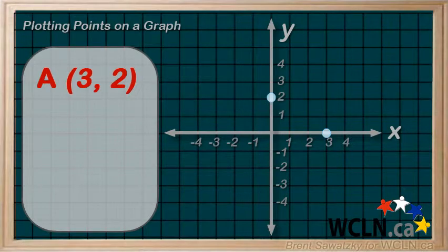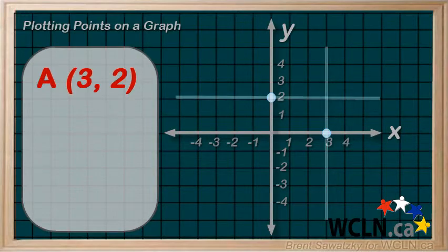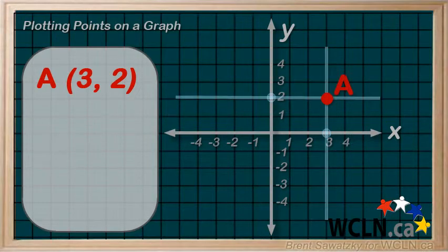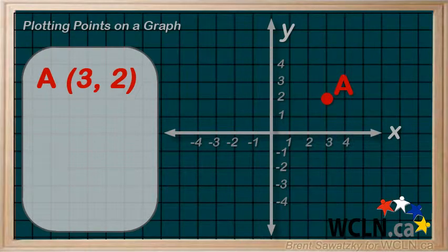Now our point A isn't at either one of these points, but is found where they intersect. So let's follow these along until we see the intersection. That's where point A belongs. Note that we could have just followed along 3 in the x direction and then 2 in the y direction and we'd arrive at the same point. So either way works for finding the location of a point.